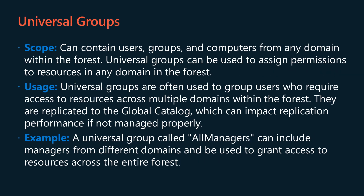The final group scope that we will discuss is universal groups. Universal groups can contain users, groups and computers from any domain within the forest. Universal groups can be used to assign permissions to resources in any domain in the forest. Universal groups are often used to group users who require access to resources across multiple domains within the forest. Universal groups are replicated to the global catalog, which can impact replication performance if not managed properly.